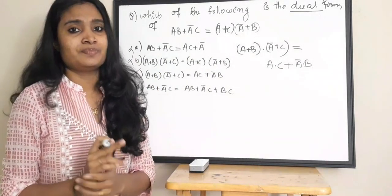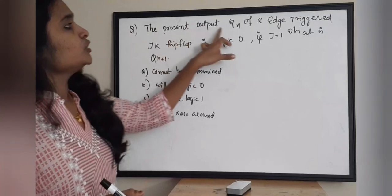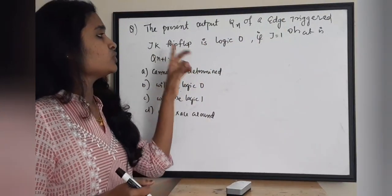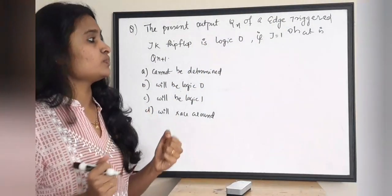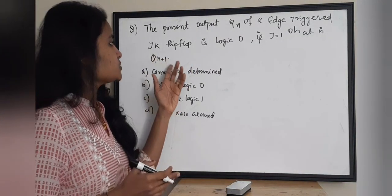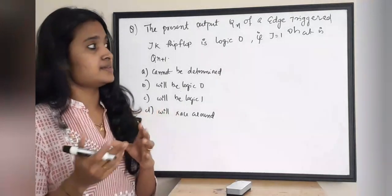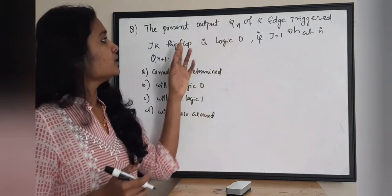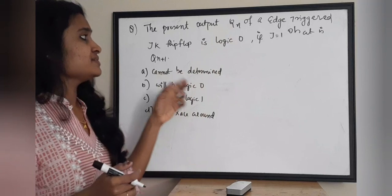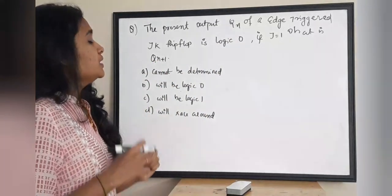The next question: the present output QN of an edge-triggered JK flip-flop is logic 0. If J is 1, what is QN+1? Here QN+1 is the next state and QN is the present state.